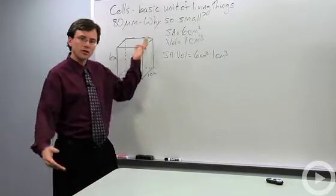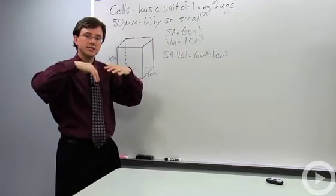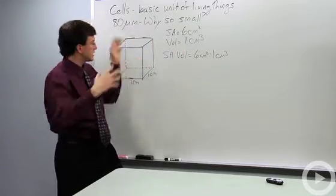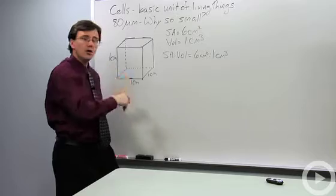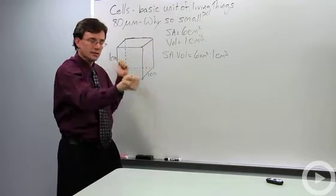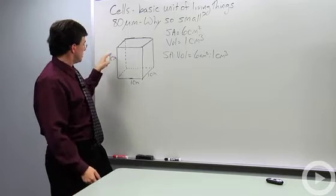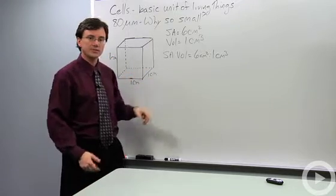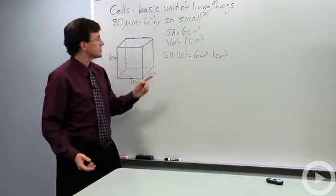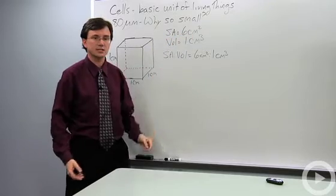Now if you're a cell, the only place for you to get in material is through your surface. That's for you to take in food or dump out waste. So if we take a look at this cube, let's pretend it's a cell. It has a dimension of one by one by one centimeter. If we calculate its surface area, we find that its surface area is six centimeters squared.